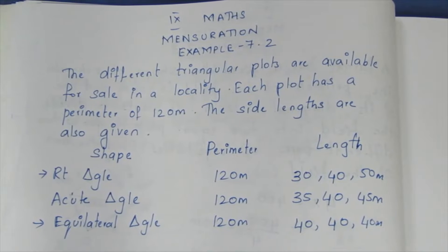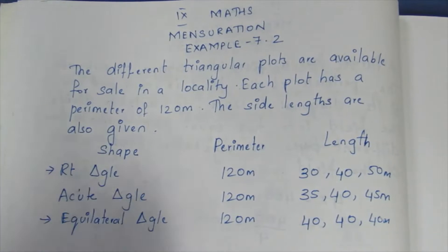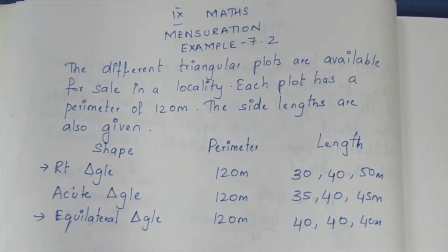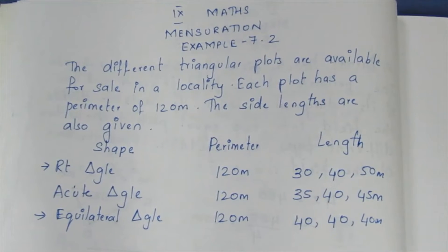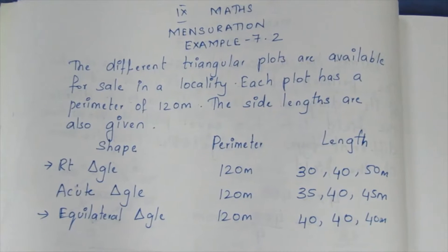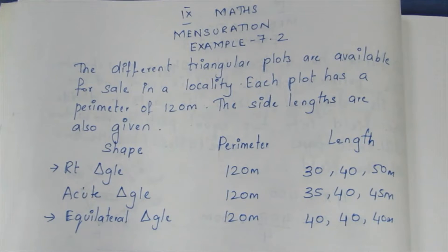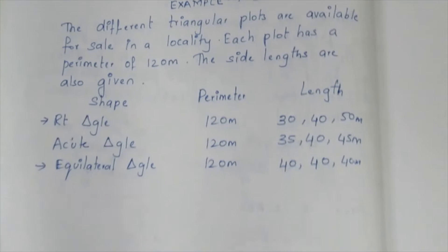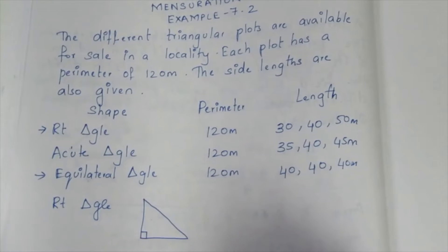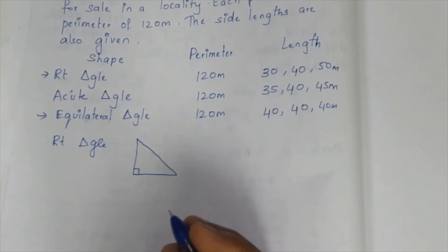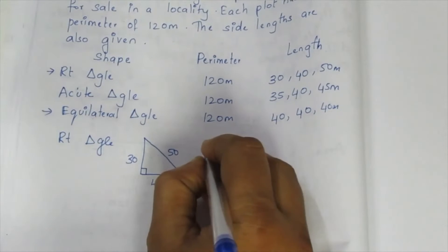We know the formulas for the right triangle and equilateral triangle. For the acute triangle, there is an advanced formula since we don't have a 90-degree angle. The question asks us to help the buyer decide which among these plots will be more spacious. For the right triangle, we use the formula: half into base into height.